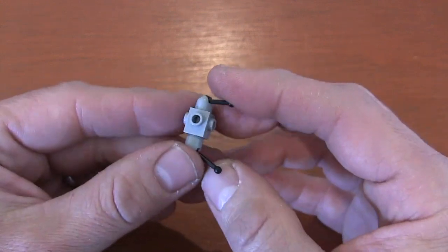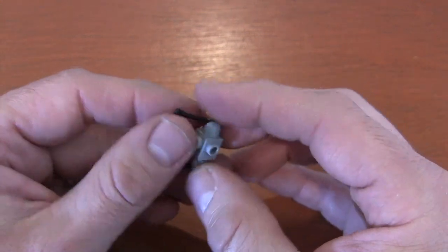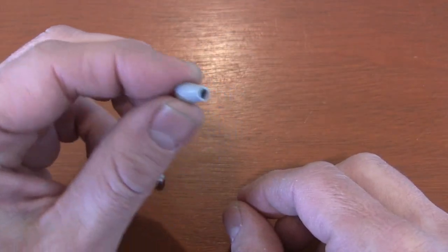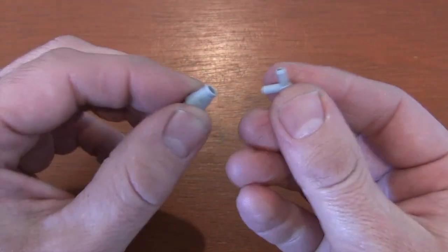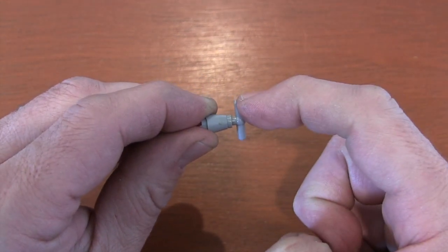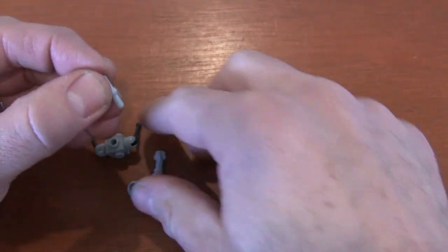And now we still have these four studs on the side of our Travis brick. Well, that's where our legs are going to go. And to build the legs, you get a cone piece with a hole, and then you stick a t-bar into that top small hole of the cone. And then this will be the top.